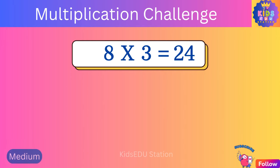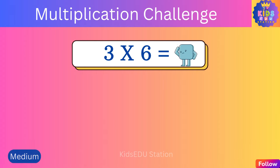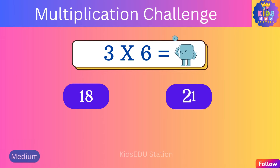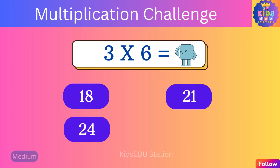Eight times three is twenty-four. What is three times six? Eighteen, twenty-one, twenty-four, twelve.